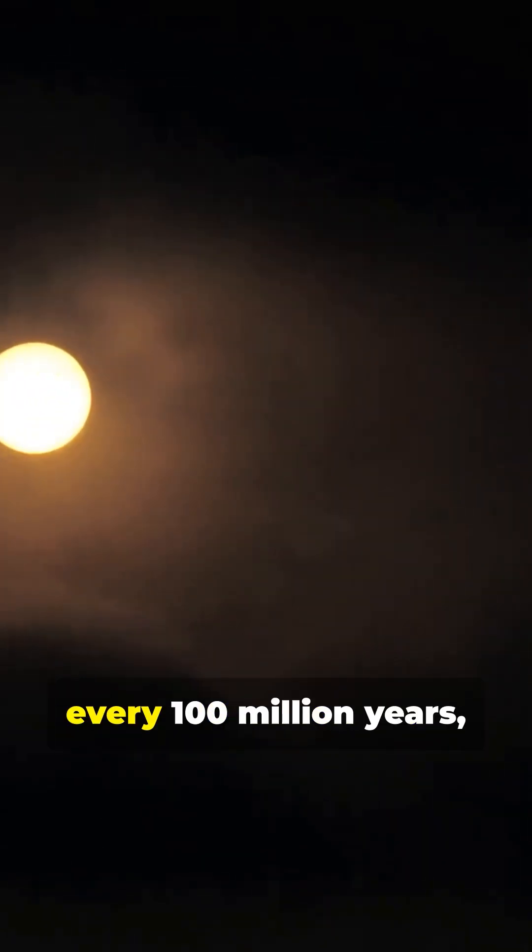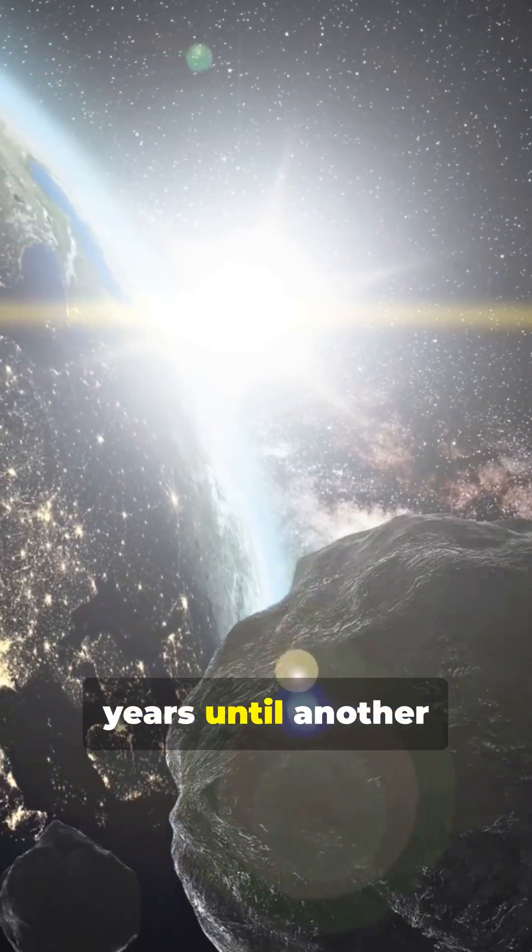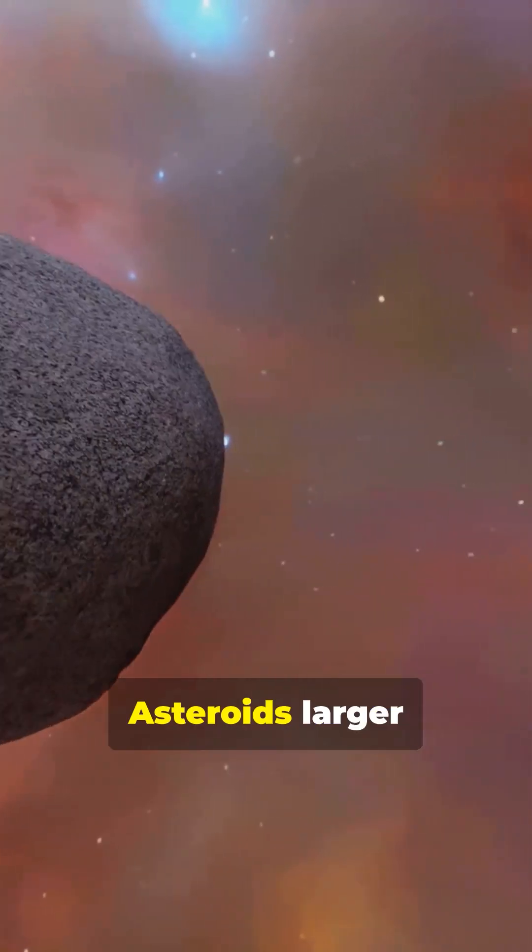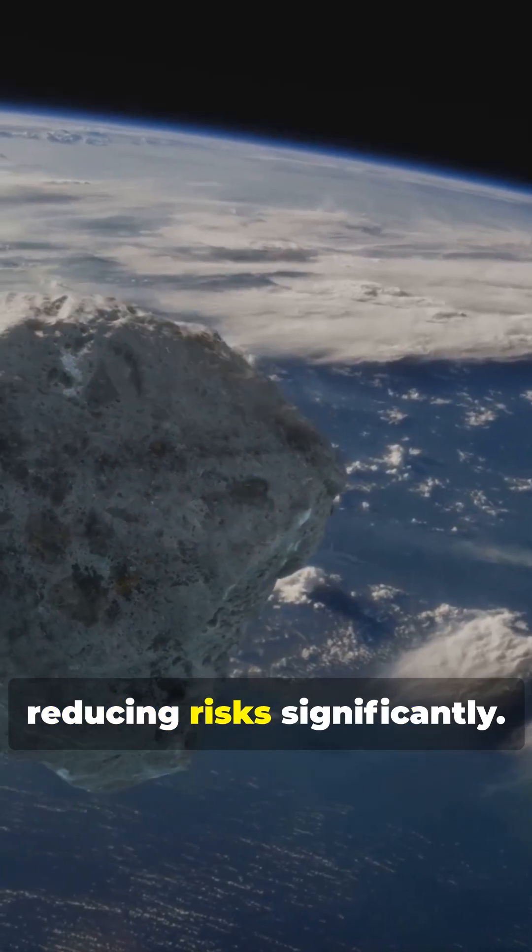Fortunately, these catastrophic impacts occur roughly every 100 million years, meaning we might have about 30 million years until another big one. Asteroids larger than half a mile are actively tracked today, reducing risks significantly.